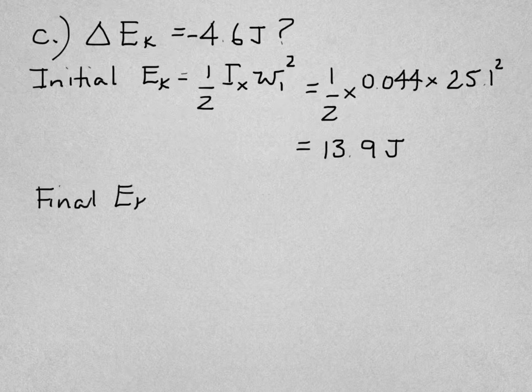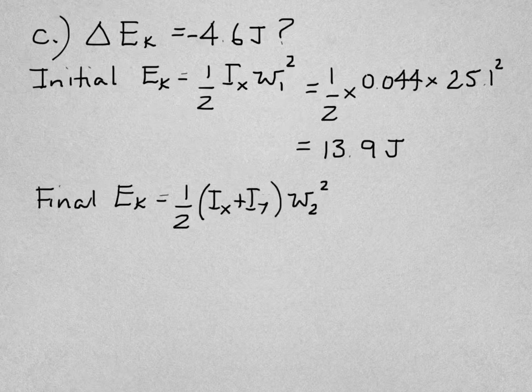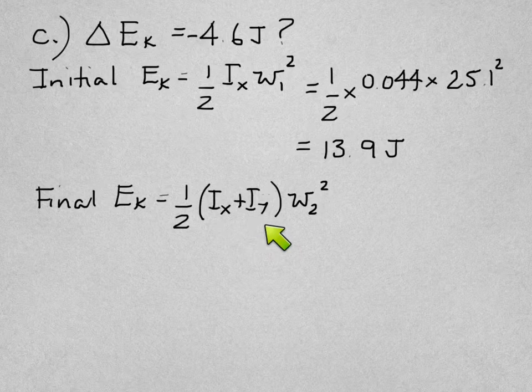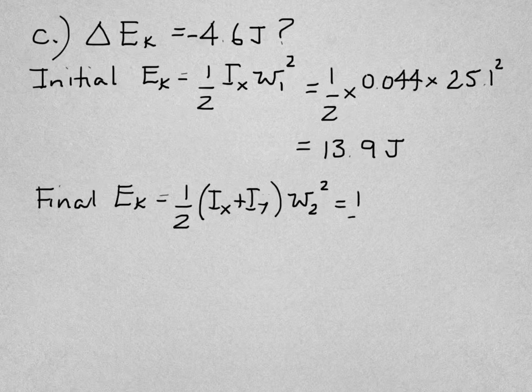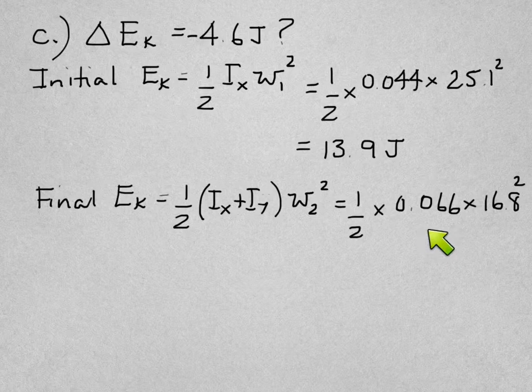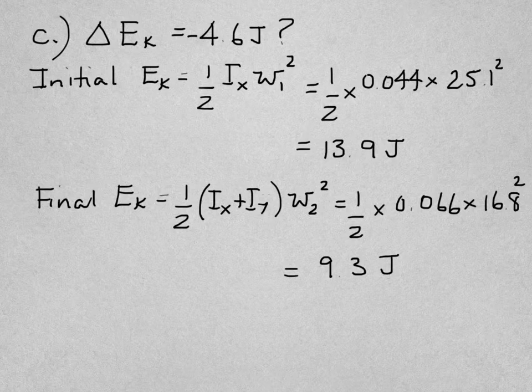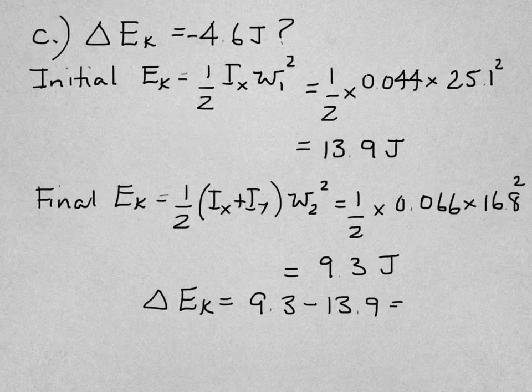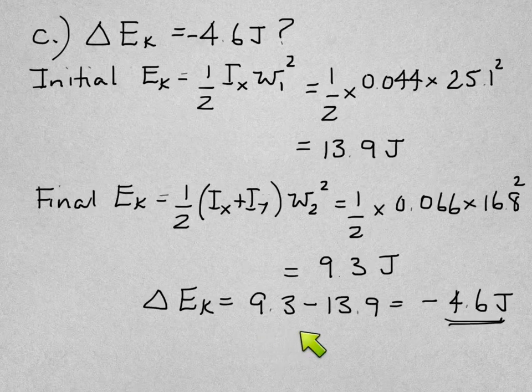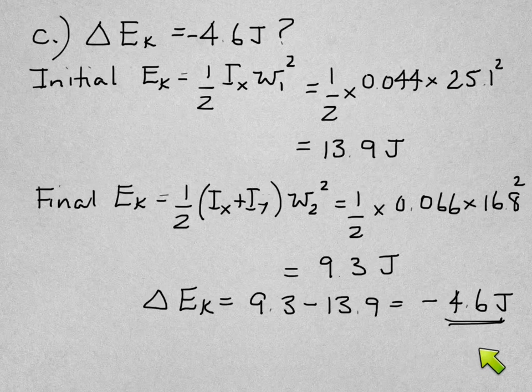Then the final kinetic energy is the same formula, half I ω² but this time the total moment of inertia is the sum of the moments of inertia of the two discs, I_X plus I_Y. 0.044 plus 0.022 comes to 0.066 for the combined moment of inertia, and the final speed 16.8. Putting all that together comes to 9.3 joules. So the change in kinetic energy is the final E_K minus the initial E_K, gives us minus 4.6 joules which is what they asked us to prove.